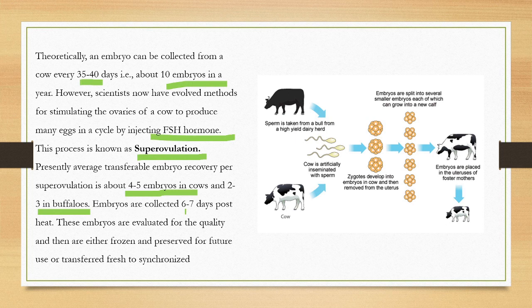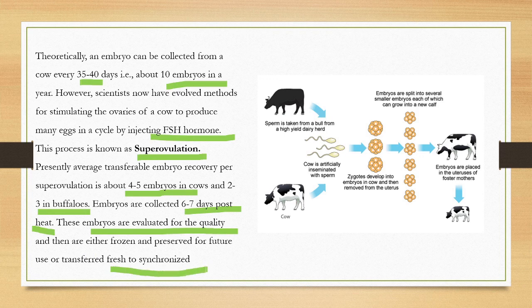Embryos are collected six to seven days post-heat. These embryos are evaluated for quality and then either frozen or preserved for future use, or transferred fresh to a synchronized recipient cow using a standard transfer procedure.